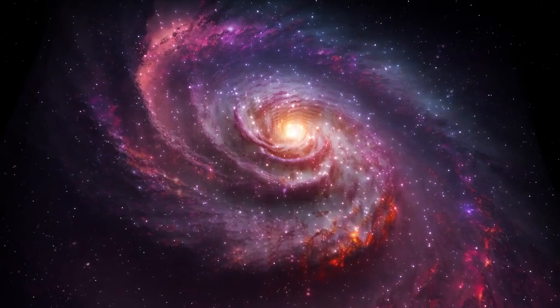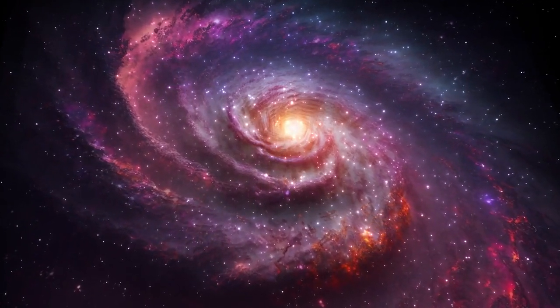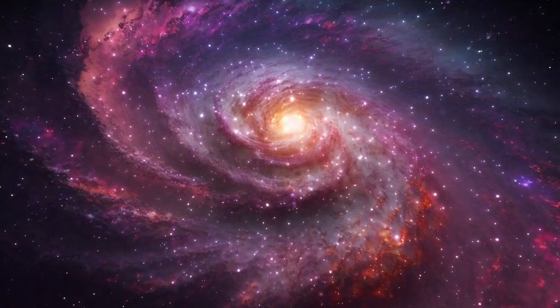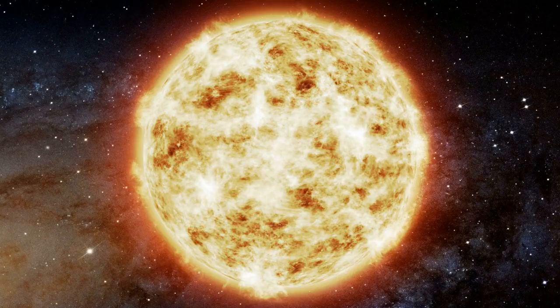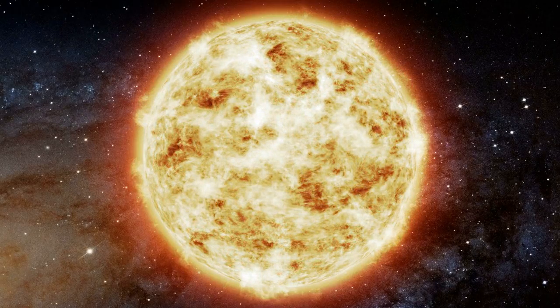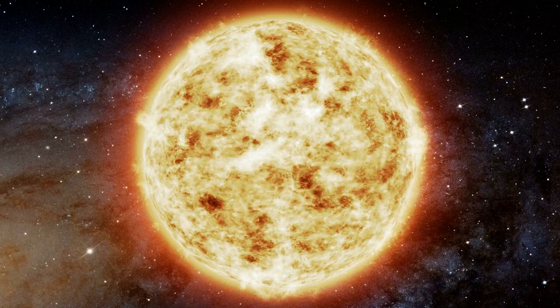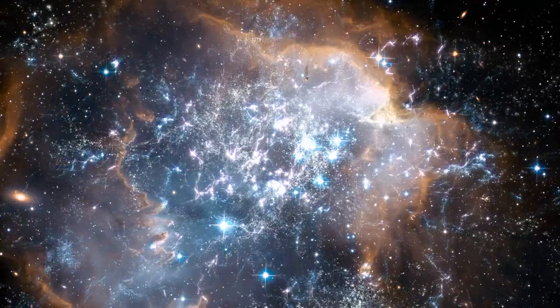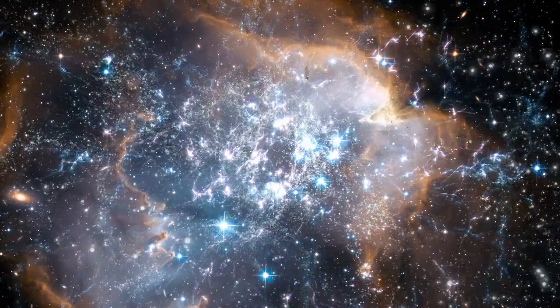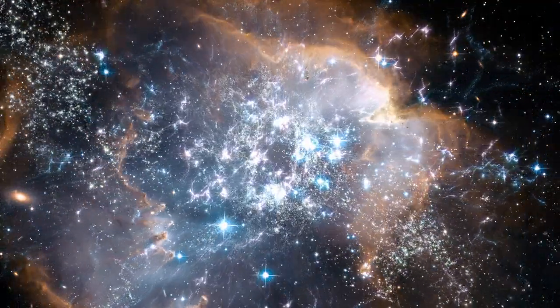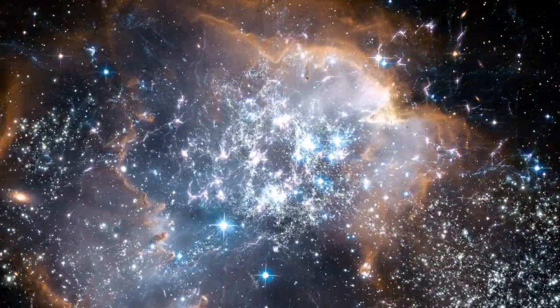The Milky Way is a barred spiral galaxy consisting of a rotating disk of stars and a central bar-like structure. It is estimated that the Milky Way is home to over 100 billion stars, including our very own sun. Our galaxy is about 100,000 light-years in diameter, making it roughly 1,000 times larger than the average galaxy.